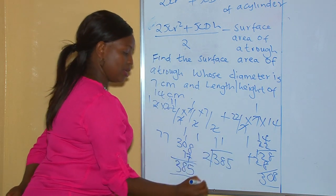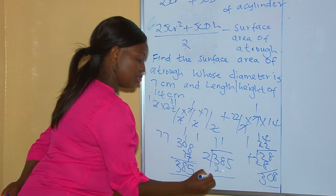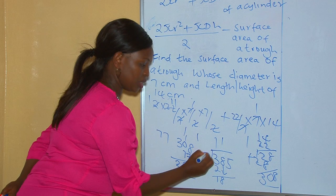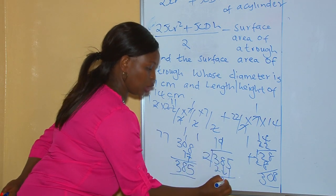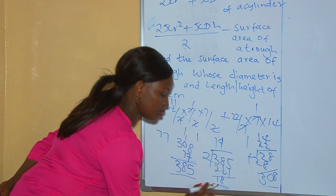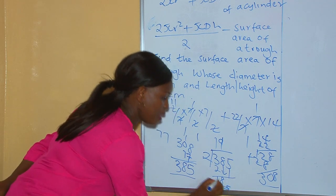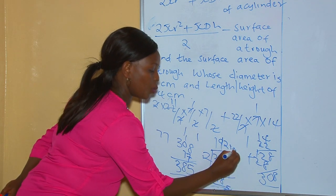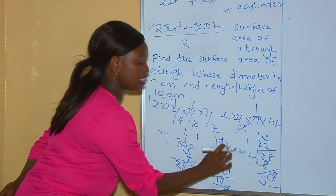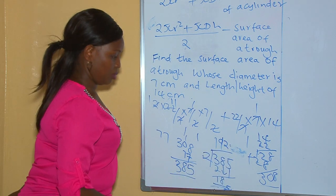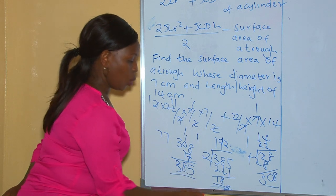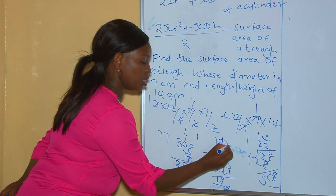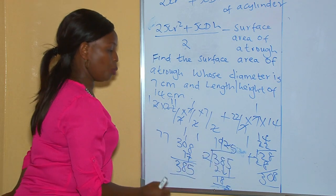We divide 385 by 2. 3 divided by 2 is 1 remainder 1. Bring down 8 to get 18; 18 divided by 2 is 9. Bring down 5; 5 divided by 2 is 2 remainder 1. For the decimal: bring down a 0 to get 10; 10 divided by 2 is 5. So the answer is 192.5.